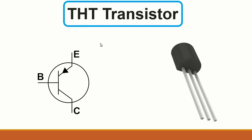Next we have transistors — THT transistors with visible terminals. For a transistor we have base, emitter, and collector. This type here is a PNP transistor because the arrow goes from emitter to base. When the arrow points the other direction, we call it an NPN transistor. Important tip: never replace a PNP transistor with an NPN transistor or vice versa — you will burn it automatically.